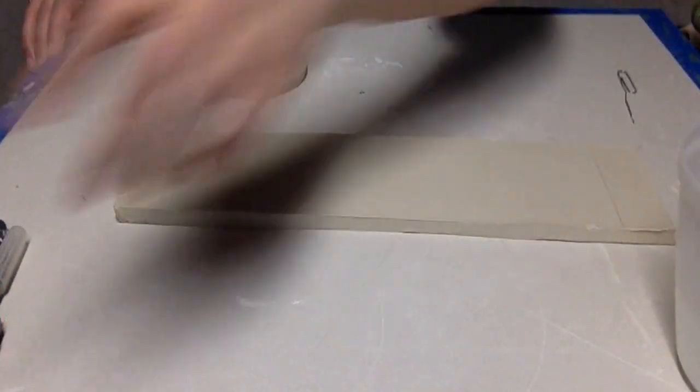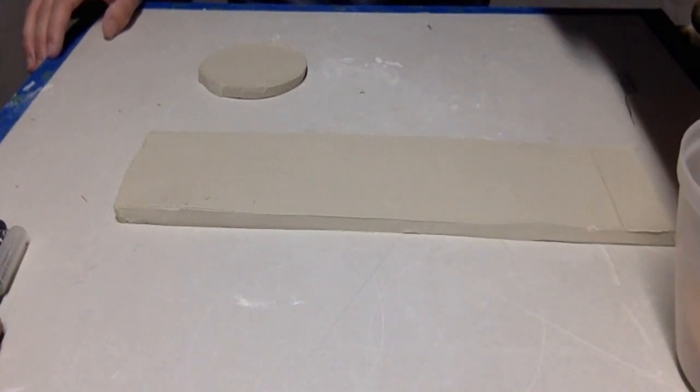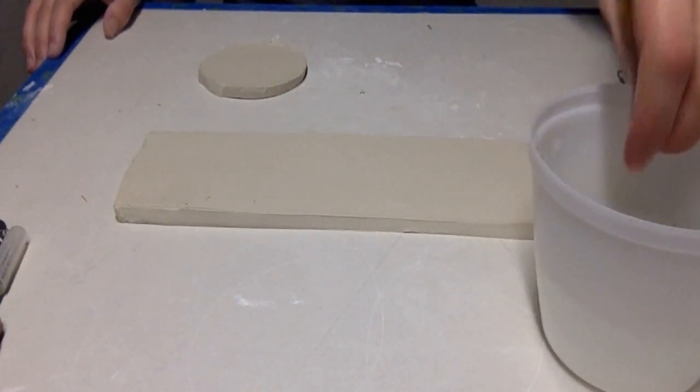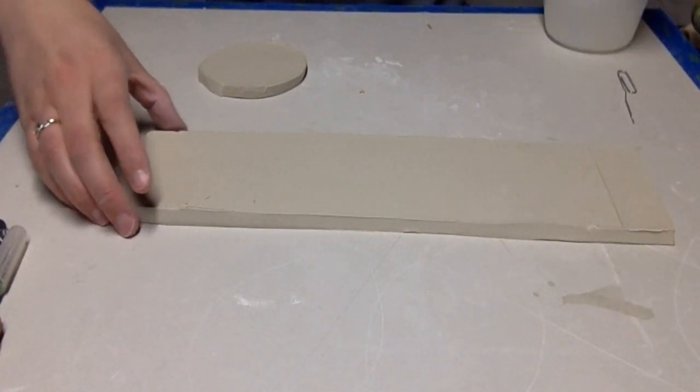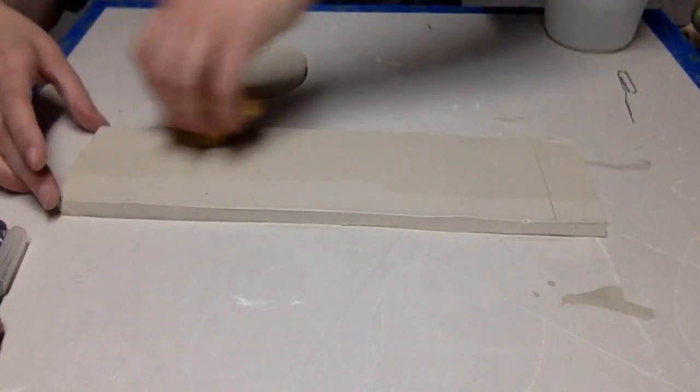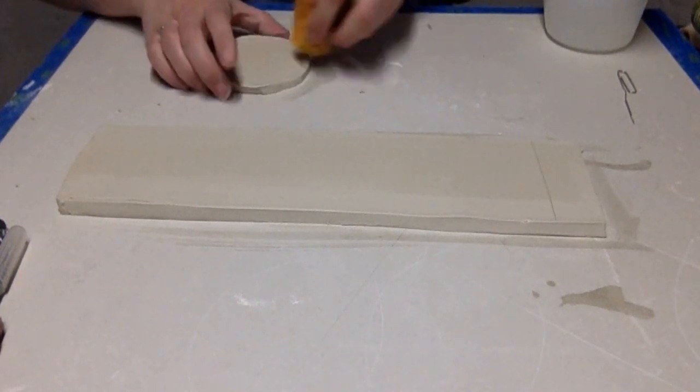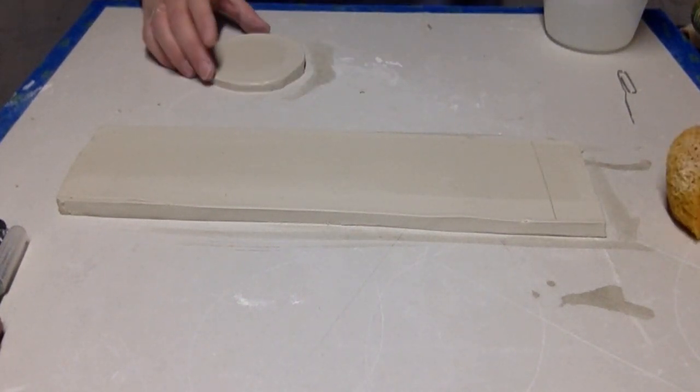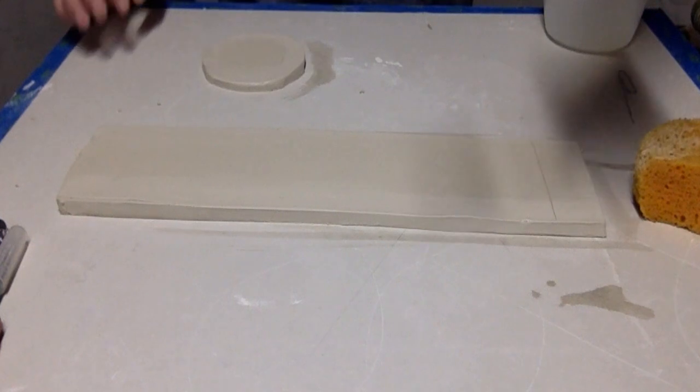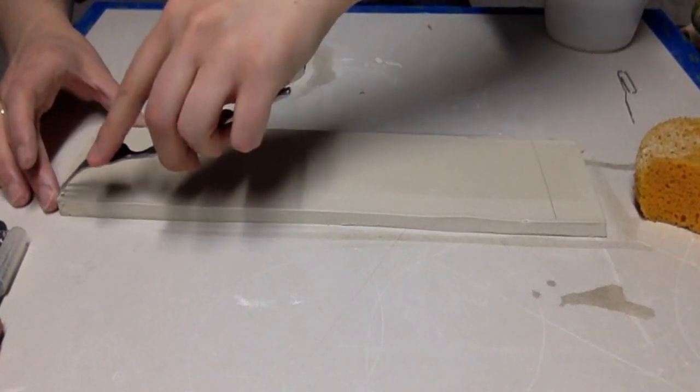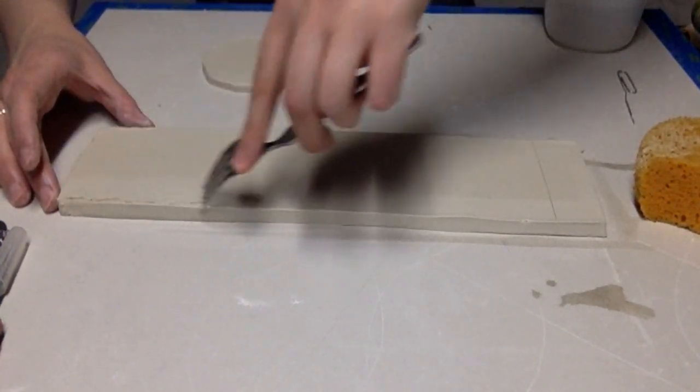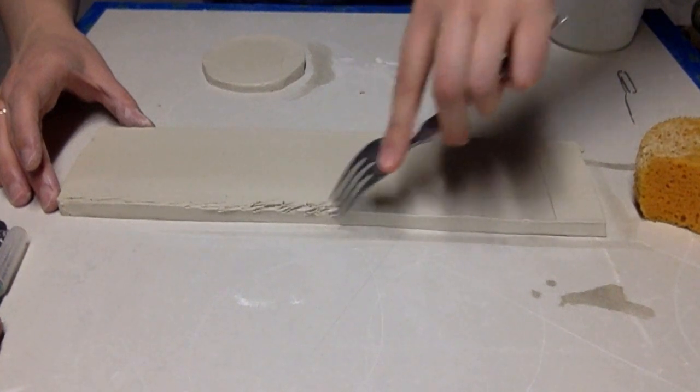Grab some water and your sponge and we'll wipe down all of the edges with the damp sponge. This is to clean up those loose bits on the edges, but also to help start slipping and scoring, which will act like a glue and be able to stick the bottom of the planter to the sides.